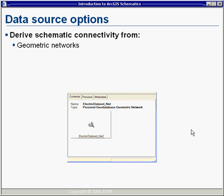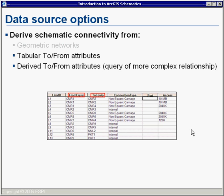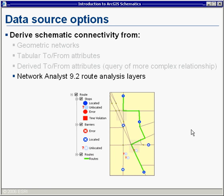Schematics is really concerned with connectivity — showing relationships and interdependencies among elements. We have several options to derive connectivity: topological coincidence from the logical tables behind a geometric network, to-and-from attributions in tabular data, custom code against a third-party API, or — at the next release, ArcGIS 9.2 — the ability to consume Network Analyst route analysis layers.